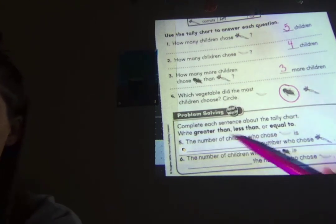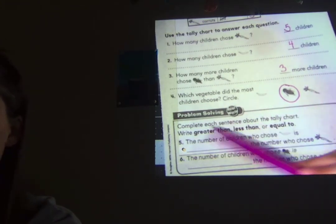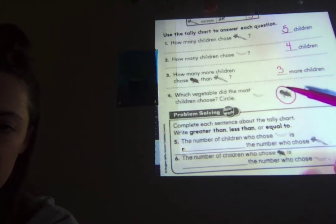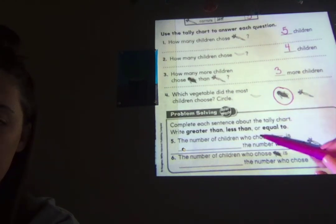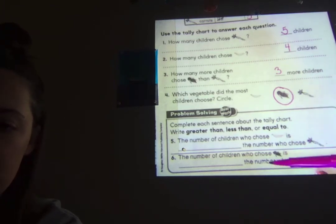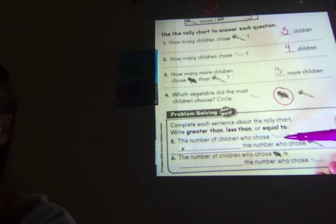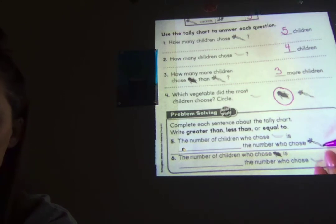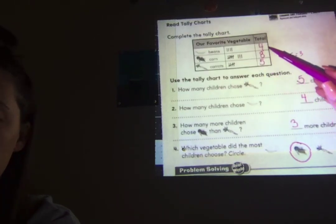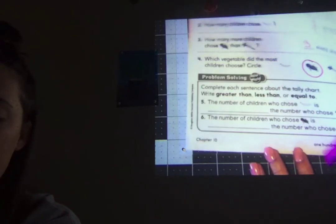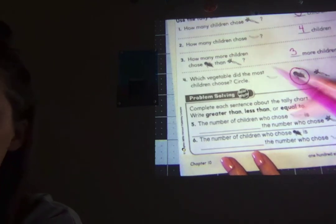Alright, number five. Let's read this. Complete each sentence about the tally chart. Write greater than, less than, or equal to. Oh my goodness. It's been a long time since we talked about greater than, less than, or equal to. But you guys remember, if the number is bigger, it's greater than. If the number is smaller, it's less than. If the number is the same, it's equal to. Let's check this out. The number of children who chose beans is blank, the number who chose carrots. Hmm. Four chose beans, and five chose carrots. Is four less than five, greater than five, or equal to five? You should have said four is less than five, right? You would rather have, alligator would rather have five pieces of food than four pieces of food. Less than.